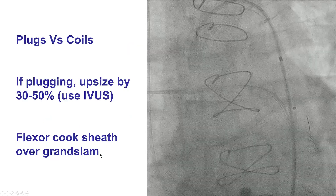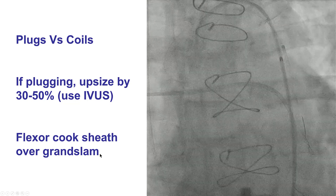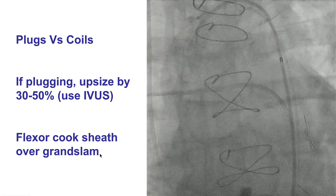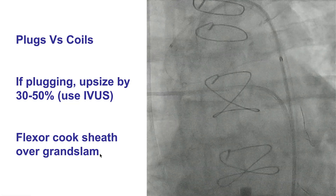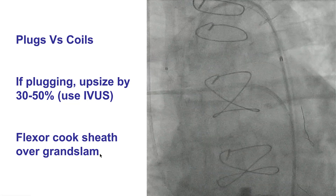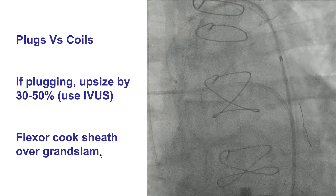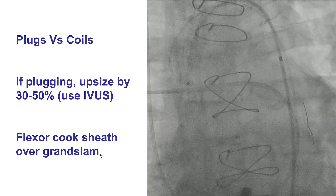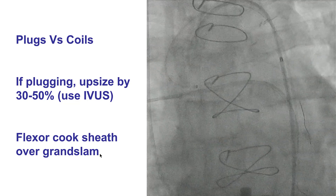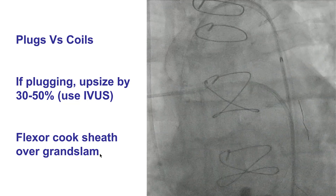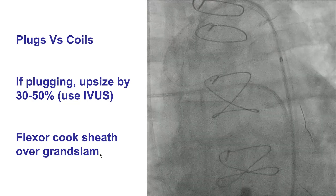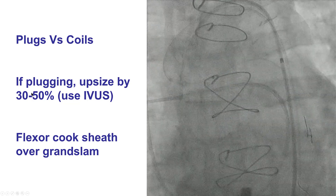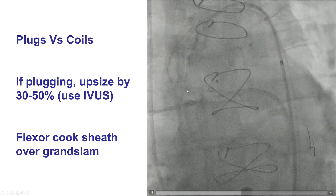In this case, we thought there was significant competitive flow from the vein graft, and we decided to try to occlude the bypass graft. Quite often for doing that, we use Amplatzer vascular plugs that are often oversized by 30 to 50%.